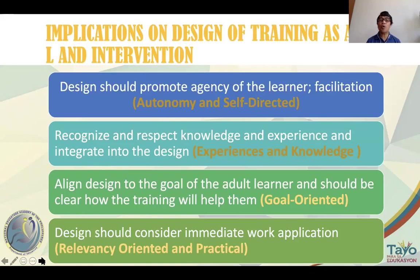The third implication has to do with goal-orientedness. The adult learner's orientation to learn is towards addressing a problem or improving task performance, so we need to align the design to the goal of the adult learner. The training should be clear on how it will help the adult learner address identified problems. With respect to relevancy and practical nature of the learner, the design should consider immediate work application — it's not enough to give theory and concepts; we need to ensure that after training, participants will be able to apply what they have learned.